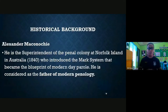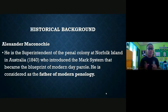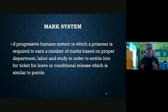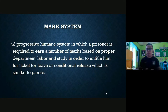Let us go to the historical background of parole, starting with the father of modern penology. The father of modern penology is Alexander McConocci, superintendent of the penal colony at Norfolk Island in Australia, who introduced the mark system. The mark system is a humane system in which a prisoner earns marks based on proper deportment, labor, and study in order to be entitled to a ticket for leave or conditional release, which is similar to parole. Basically, the mark system is like a merit and demerit system.